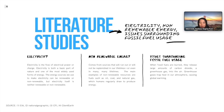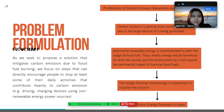In this literature study we will be discussing electricity, non-renewable energy surrounding fossil fuel usage. Electricity is the flow of electrical power or charge — it is both a basic part of nature and one of the most widely used forms of energy. Non-renewable energy comes from sources that will run out and will not be replenished in our lifetimes. Examples include oil, coal, and natural gas. When burned, they release large amounts of carbon dioxide, a greenhouse gas, into the air, causing global warming.